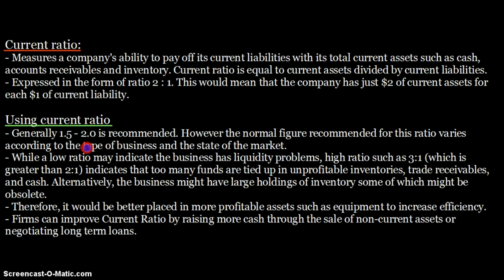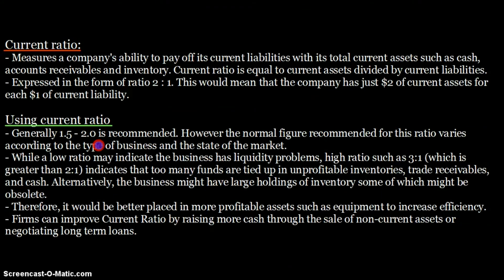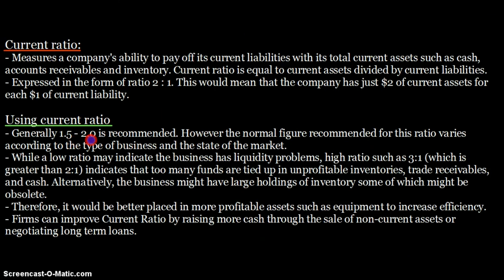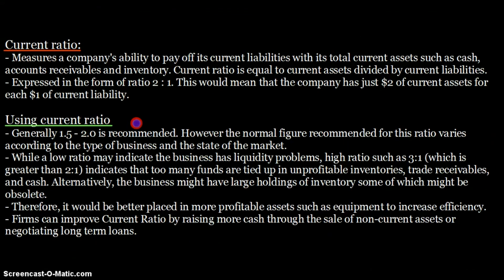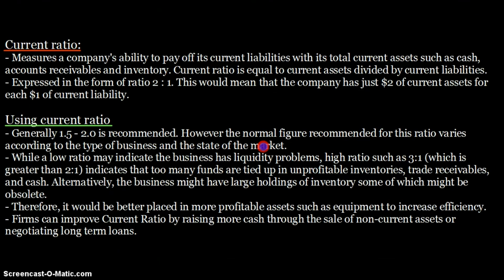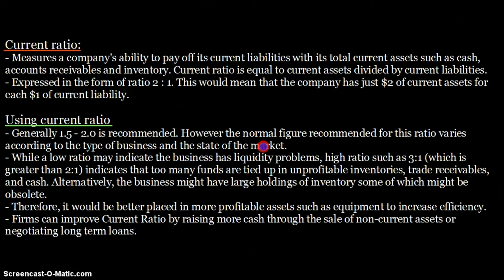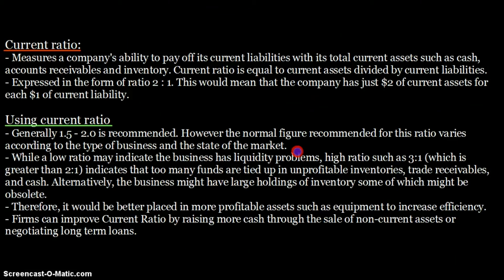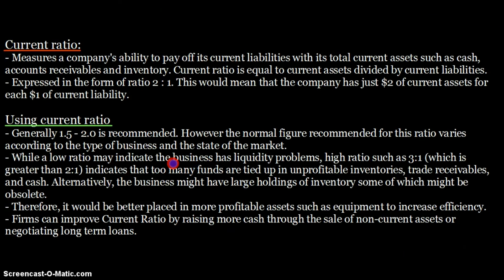Generally, 1.5 to 2.0 is the recommended current ratio. Previously anything greater than 2 was considered okay, but now 1.5 to 2.0 is preferred. Less than 1.5 is not good, and greater than 2.0 is also not ideal. This recommended range varies according to the type of business and the state of the market — for example, during a recession ratios may be lower, while seasonal demand increases may push ratios higher.